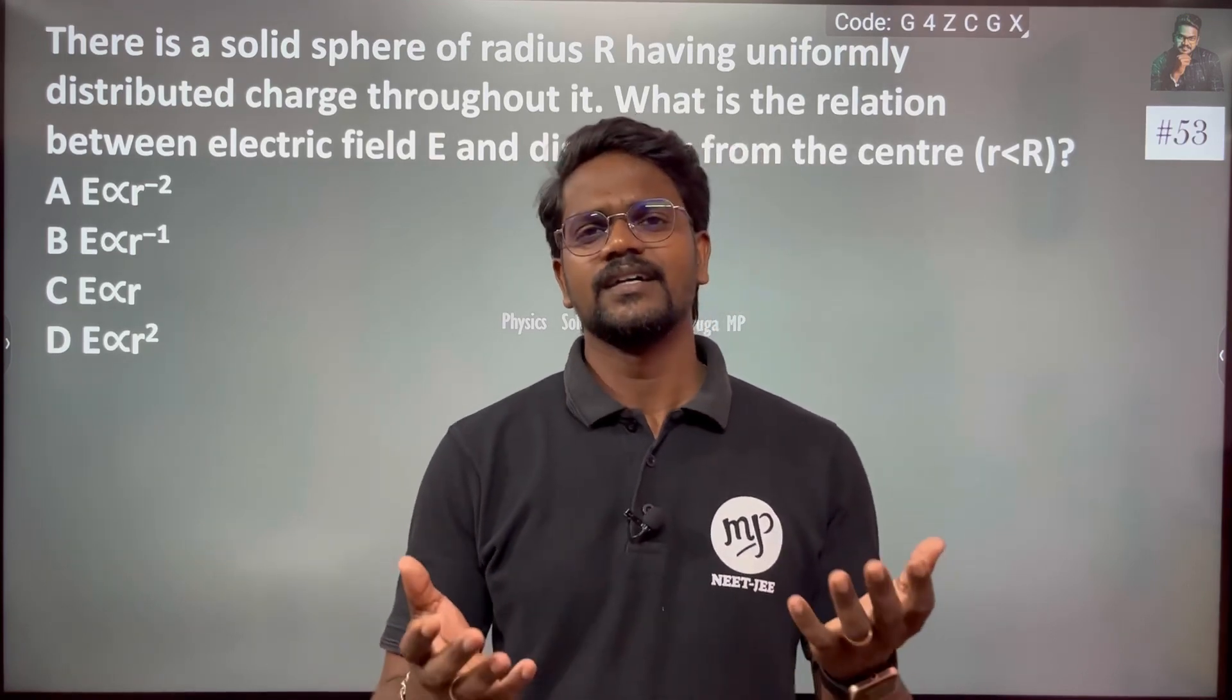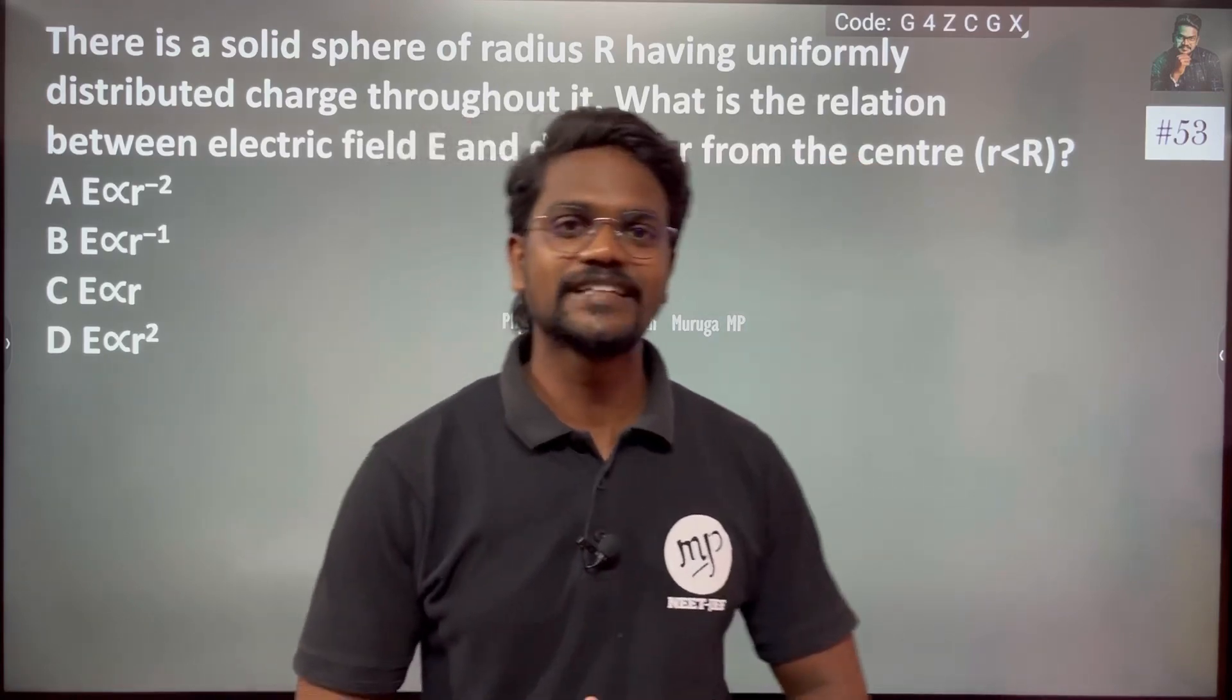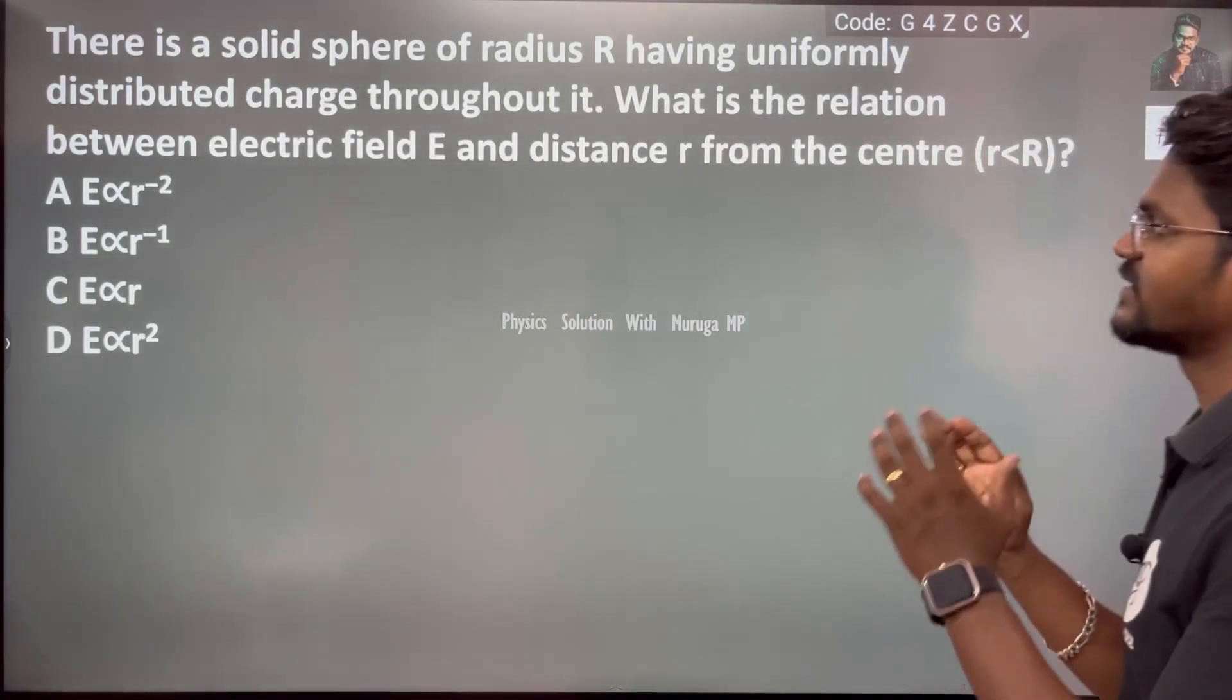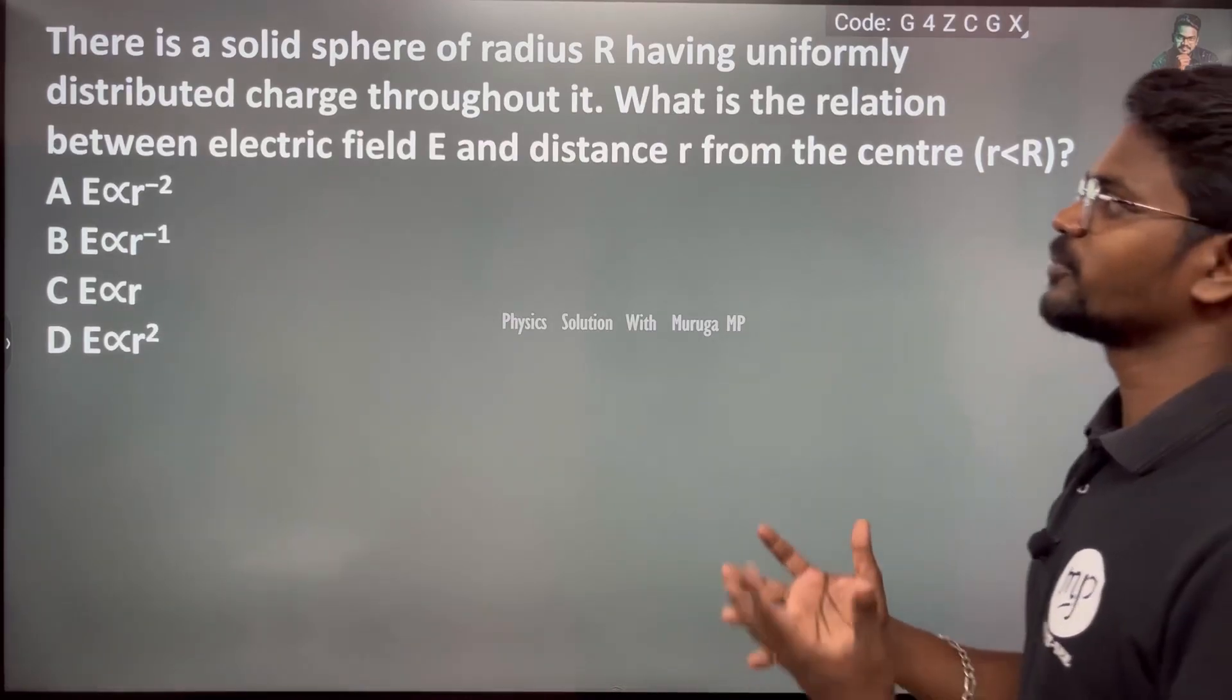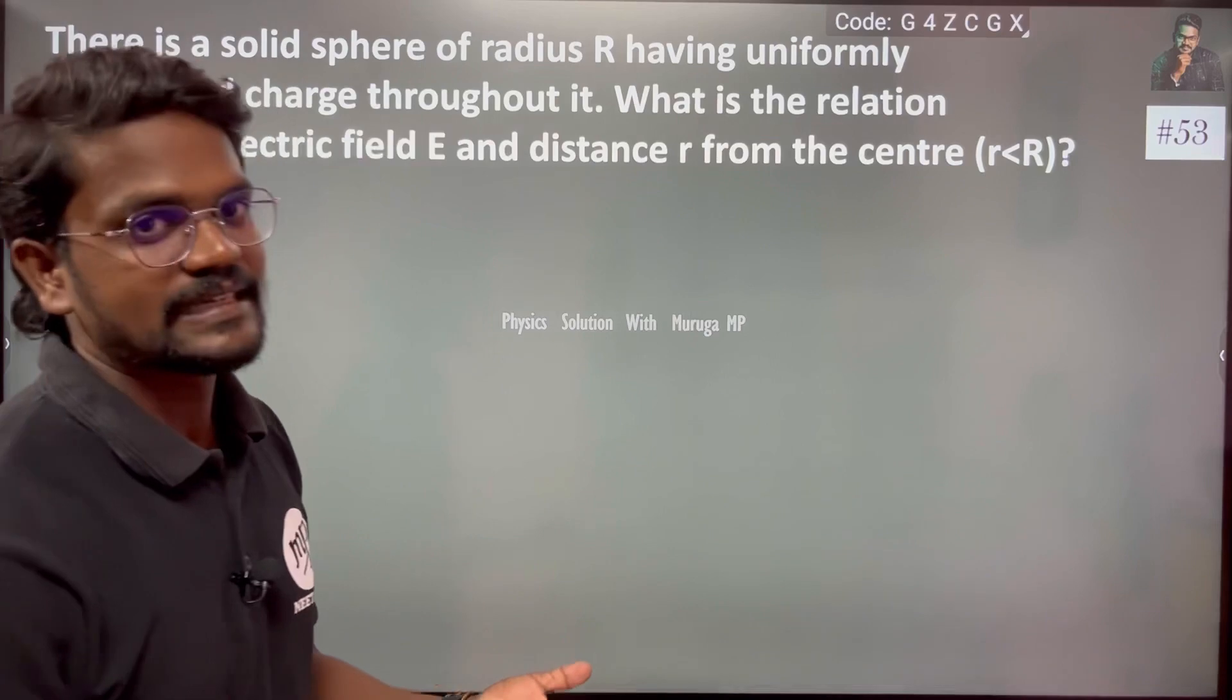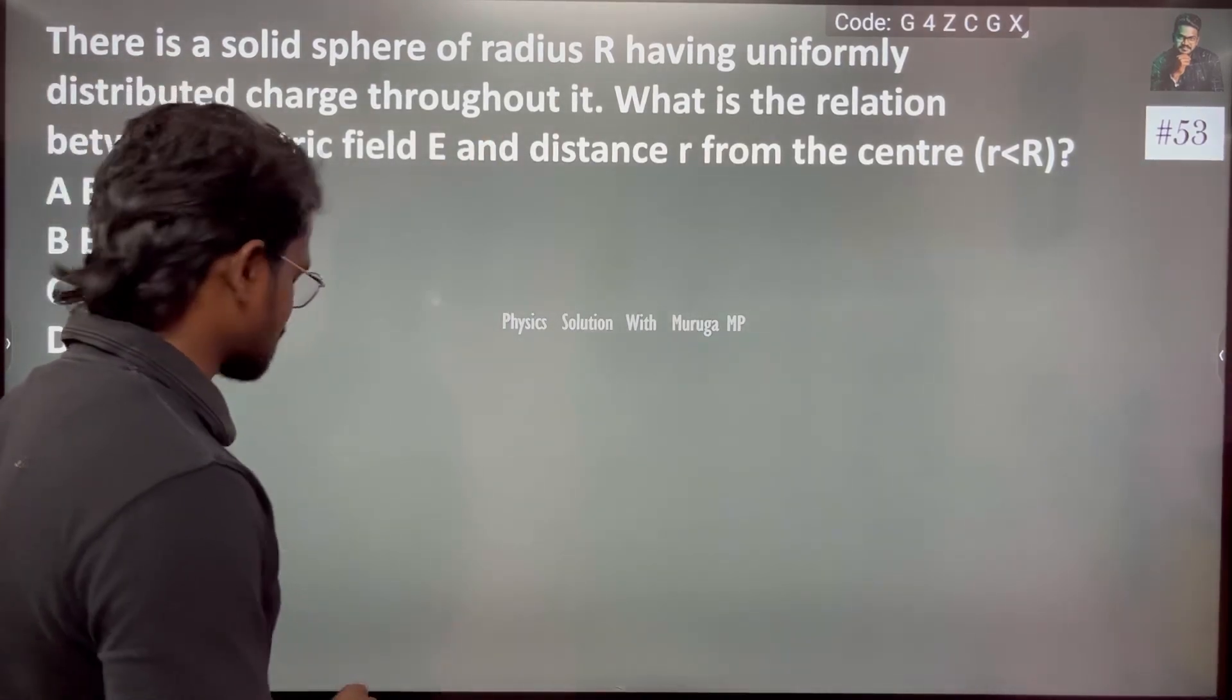Hi everyone, in this video, problem question number 53: There is a solid sphere of radius R having uniformly distributed charges throughout the sphere. What is the relation between electric field E and distance r from the center?